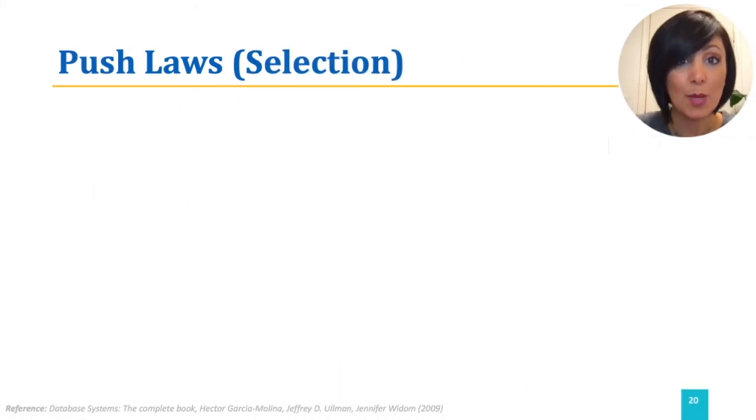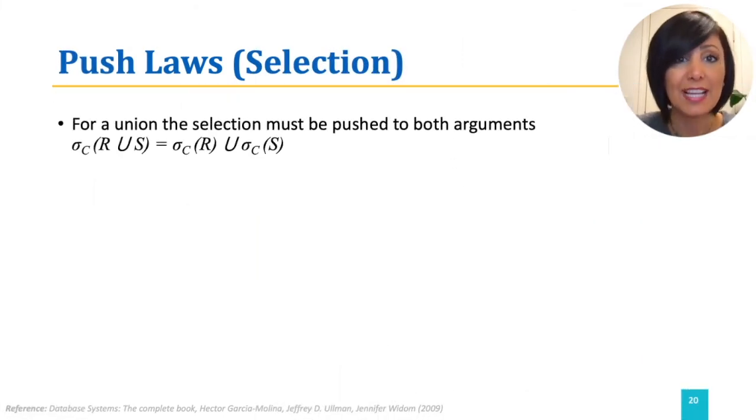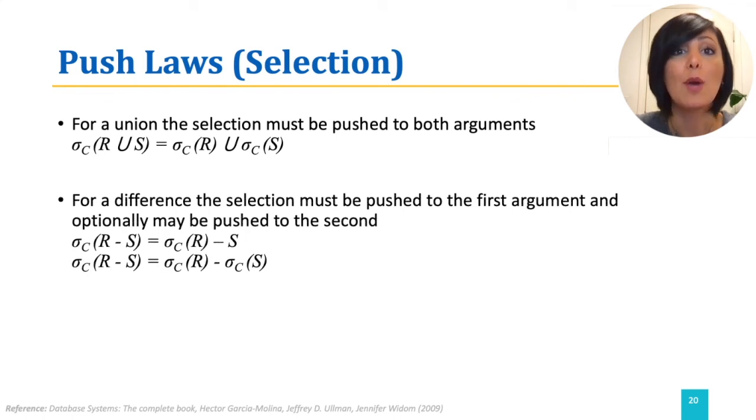Now let's see some push laws. For a union, the selection must be pushed to both arguments. For a difference, the selection must be pushed to the first argument and it can optionally be pushed to the second.